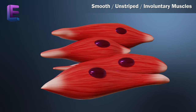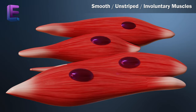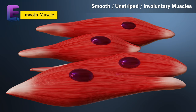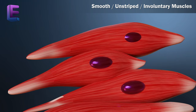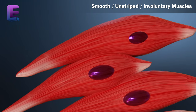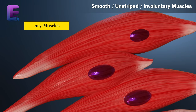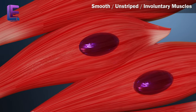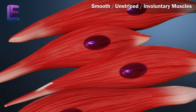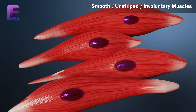Smooth muscles don't have striations, so they are called smooth muscles. They don't act on our will, so they are called involuntary muscles. They don't tire and can remain contracted for long periods of time.